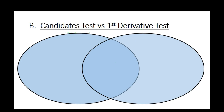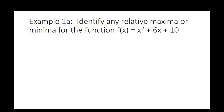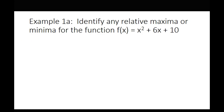On Thursday, I'm going to share something called the second derivative test — the last extrema test we're covering. It actually does the same thing as the first derivative test, just faster. The only reason we learned the first derivative test first is because the second derivative test doesn't always work.